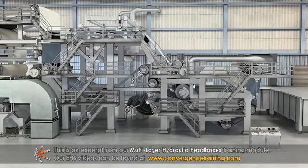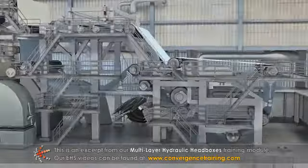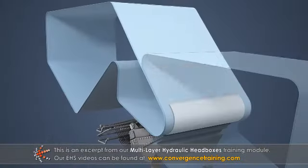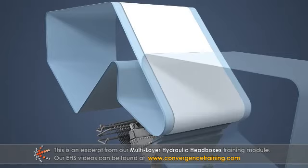A hydraulic head box contains several critical components which help it to deliver a uniform, dispersed flow of stock across the entire width of the former.